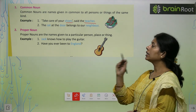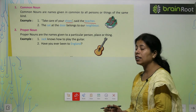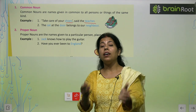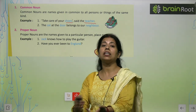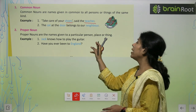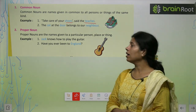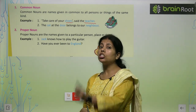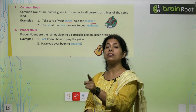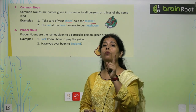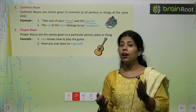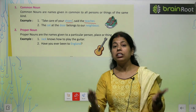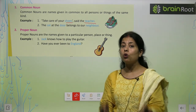Proper Noun: Proper nouns are the names given to a particular person, place, or thing. किसी एक को हम उस चीज़ से बुला सकते हैं — that is a proper noun. 'Jack knows how to play the guitar.' — Jack refers to one particular person, so it's a proper noun. 'Have you ever been to England?' — England is a particular country, so that is also a proper noun.